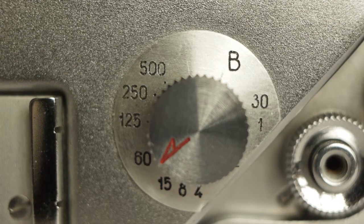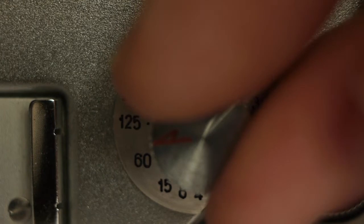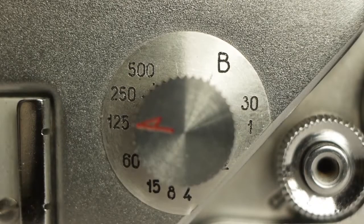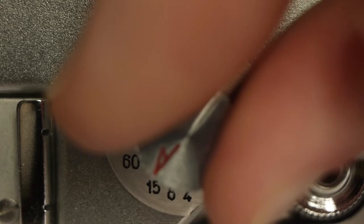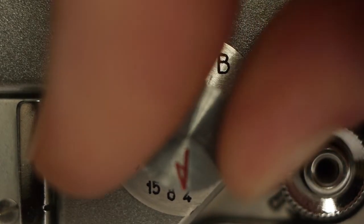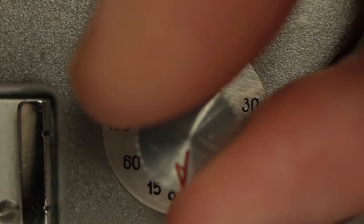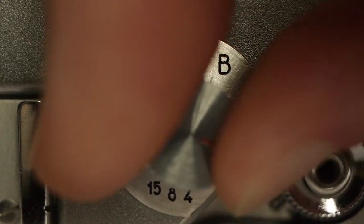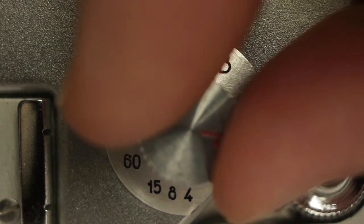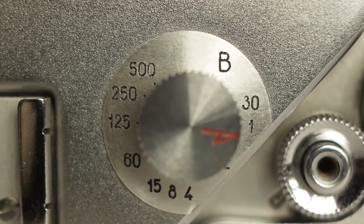To change the speed, we lift the control, turn it to the setting you want, and then let it fall into the slot. Turning this control anti-clockwise, you will be turning against spring pressure, and once you get past 1/15th of a second you'll also be turning against the pressure of the clockwork slow speed mechanism, which is actually fairly considerable pressure. So hold it firmly and guide it to the position you want.